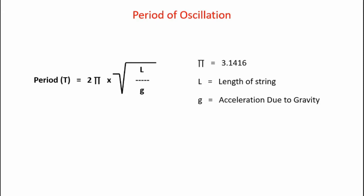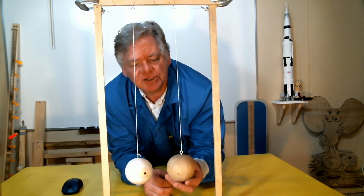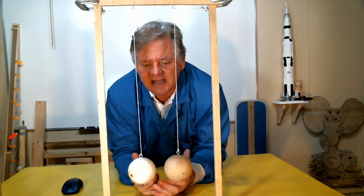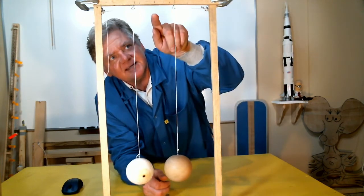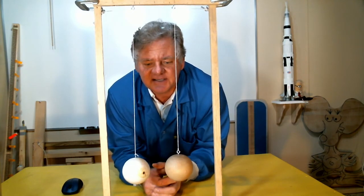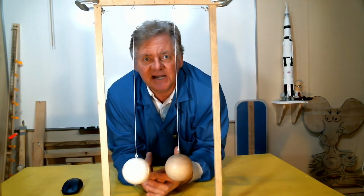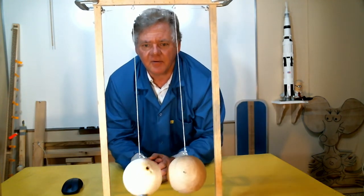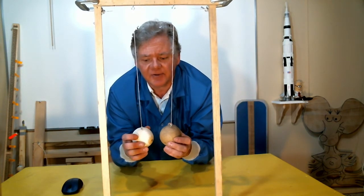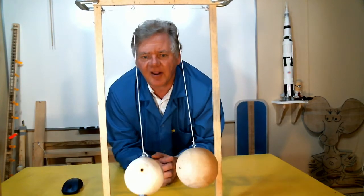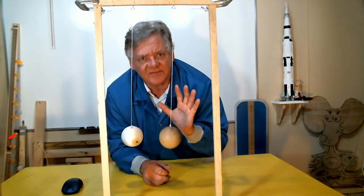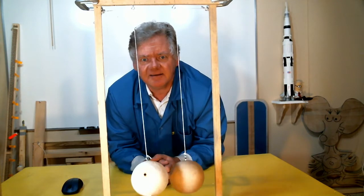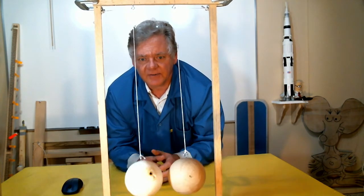Let's look at demonstrations that validate these conclusions. Here are two pendulums — one with a heavy wooden bob and one with a light styrofoam bob — with equal string lengths. The physics says they should have the same period of oscillation. When released, the first couple of swings they stay in unison. However, over time the styrofoam bob slows down and they get out of phase due to aerodynamic drag, which has a greater influence on the lighter ball — not the pendulum physics itself.